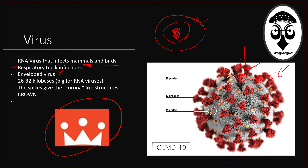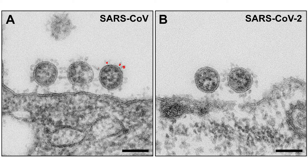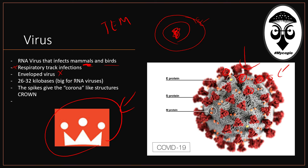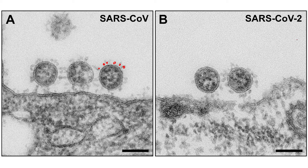When you look at it in the electron microscope — for example transmission electron microscopy (TEM) — you would see all these spikes, giving it the corona appearance. It would have 26 to 32 kilobases, which is large for an RNA virus. That is the general information about how the virus looks.